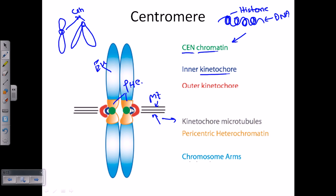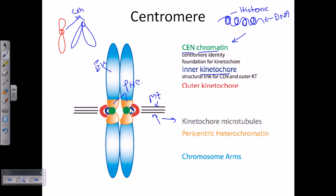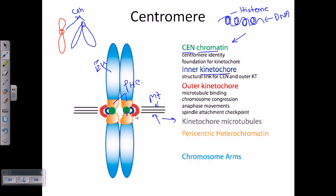Now that we know the names of all these regions, what are their functions? The CEN chromatin helps in centromere identity and acts as a foundation for the kinetochore. Centromere and telomere are very huge and active topics in molecular biology research with new ideas coming every day, so this CEN chromatin or synchromatin is a core foundation for the centromere. The inner kinetochore acts as a structural link between the synchromatin and the outer kinetochore.